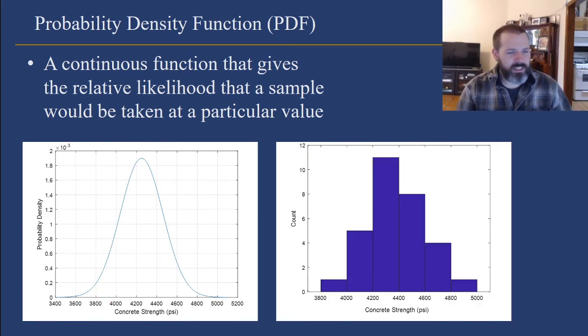The probability density function is an infinite function, but it is related to the histograms that you draw, which is based on discrete data. So the histogram for data points will give you the relative shape of the probability density function. Here you see the histogram that gives you the general shape of this probability density function. These are for concrete strengths, and they're both normally distributed. The data is finite, the probability density function is continuous.